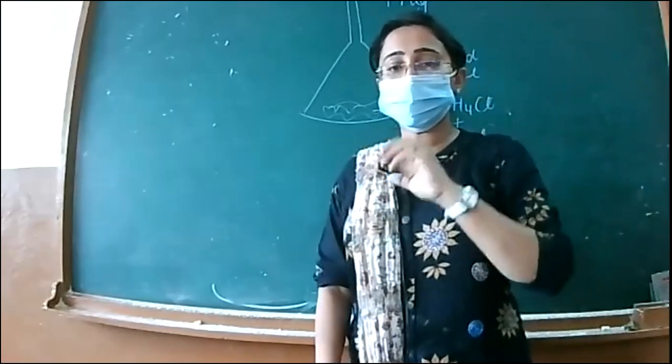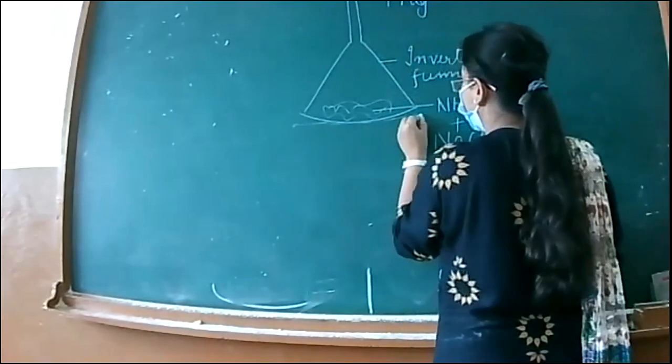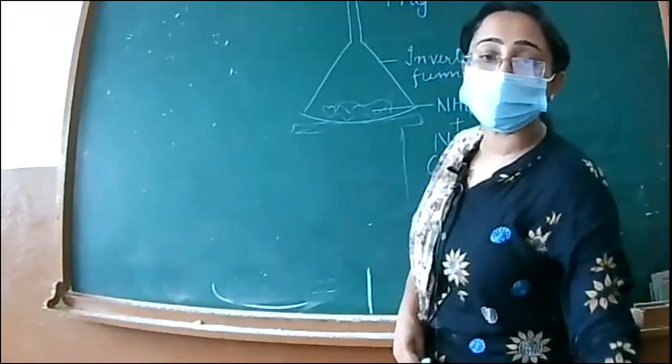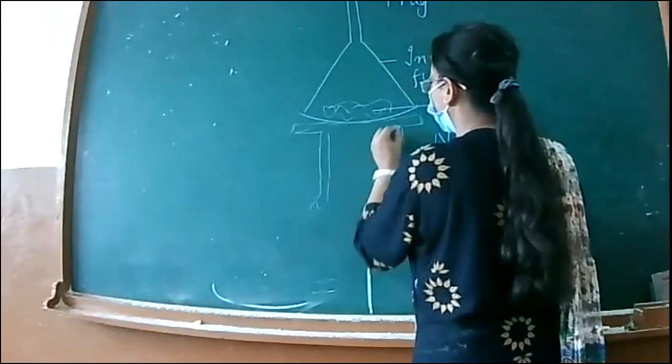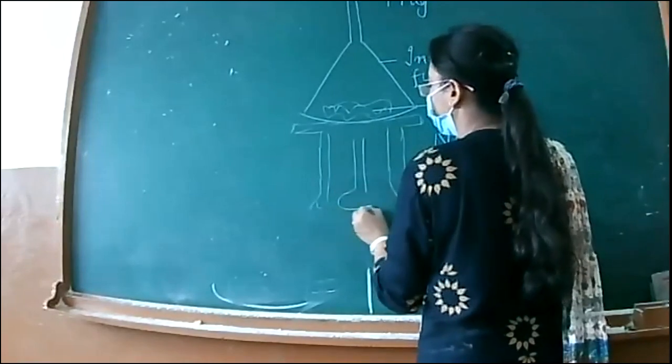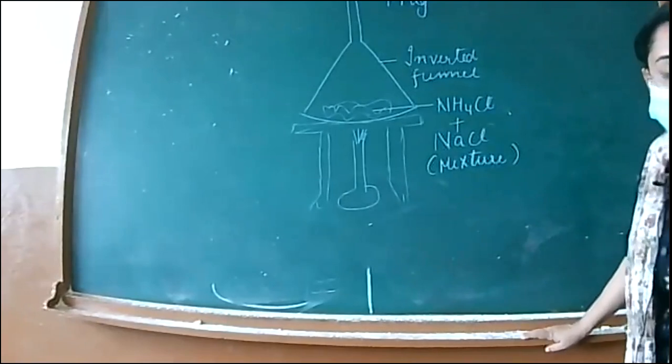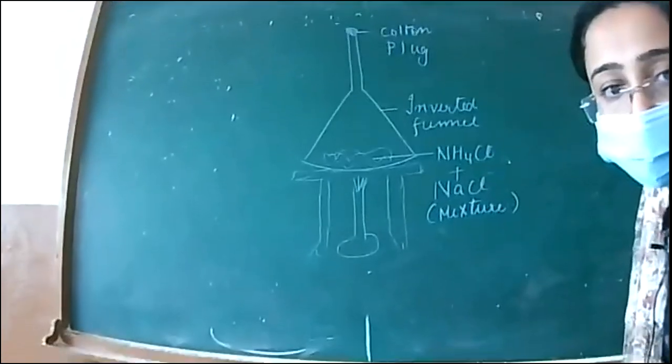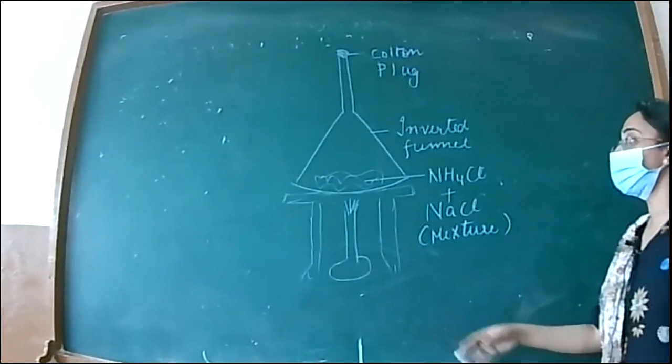The funnel is inverted. I have taken a glass funnel. Why is the Tripod Stand called a Tripod Stand? The diagram given in the book is made up of only one stand, but Tripod means it has three legs. And I have placed a burner here. Now I have started heating. So you should know these little things - why Tripod Stand is known as Tripod Stand.